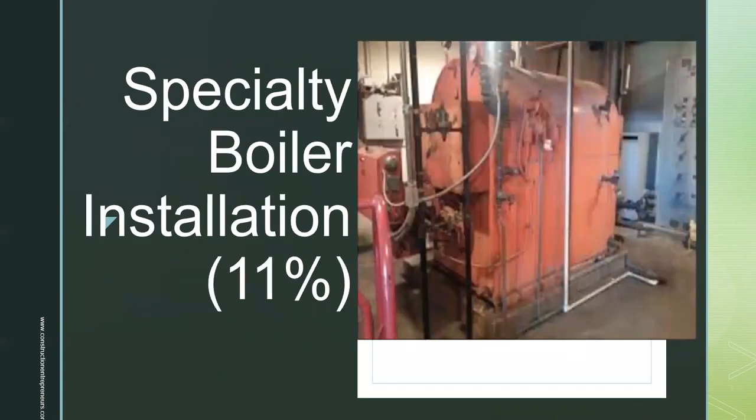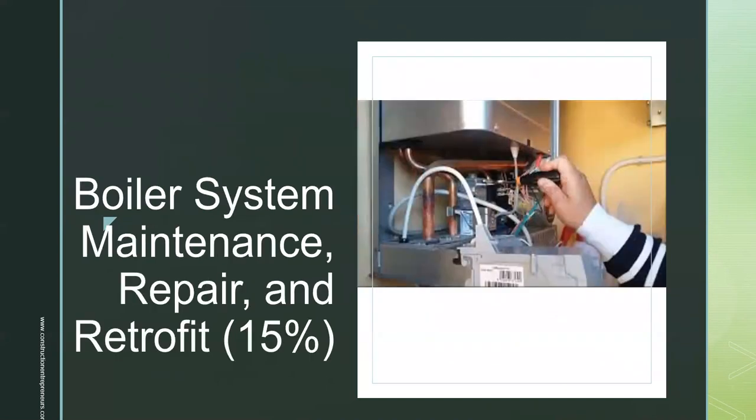Section 3 is Specialty Boiler Installation at 11% of the examination, and that's going to cover Commercial Boiler Systems, Industrial Boiler Systems, and School, Hospital, and Residential Boiler Systems. Section 4 is Boiler System Maintenance, Repair and Retrofit at 15%, covering maintaining boiler systems, repairing boiler systems, and retrofitting boiler systems.